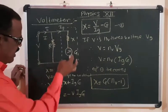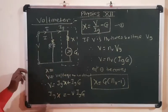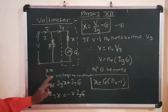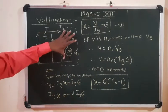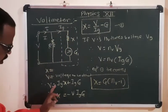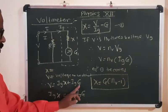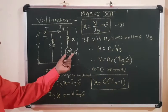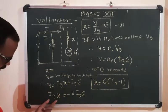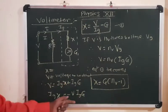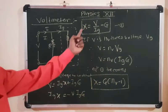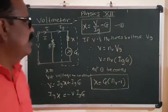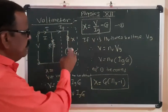A galvanometer is converted into a voltmeter by connecting a suitable high value of resistance in series with the galvanometer coil. X is the high resistance connected in series with the galvanometer coil. Let X be the high resistance and V be the voltage to be determined across the circuit. From the circuit, V = Ig·X + Ig·G, giving X = V/Ig − G.